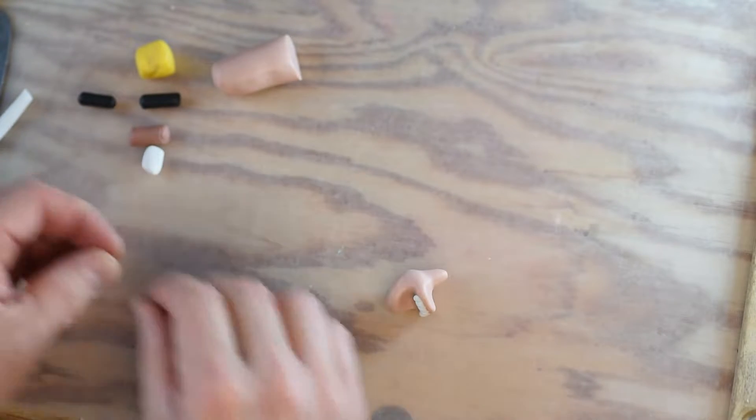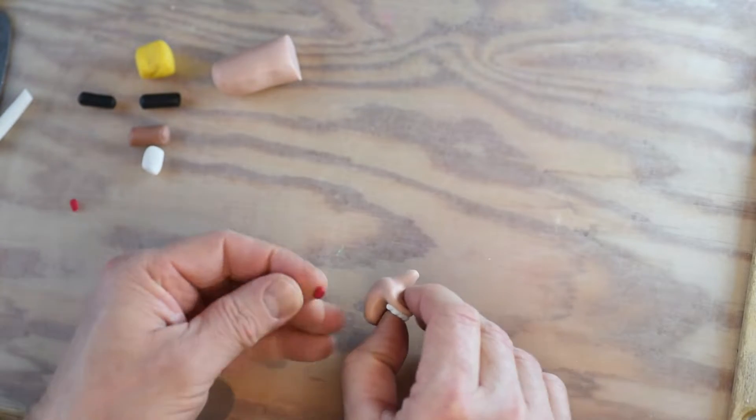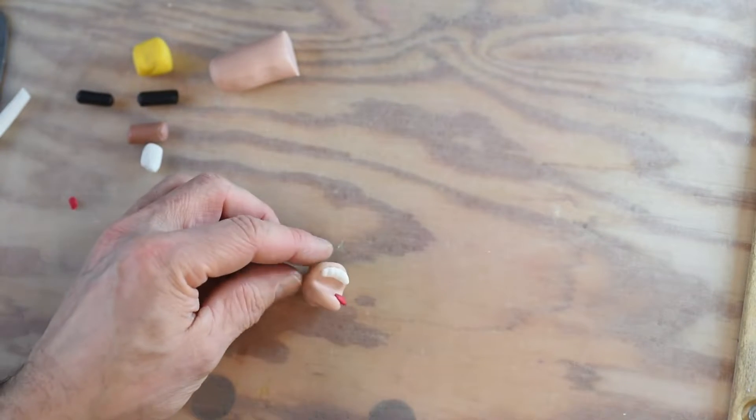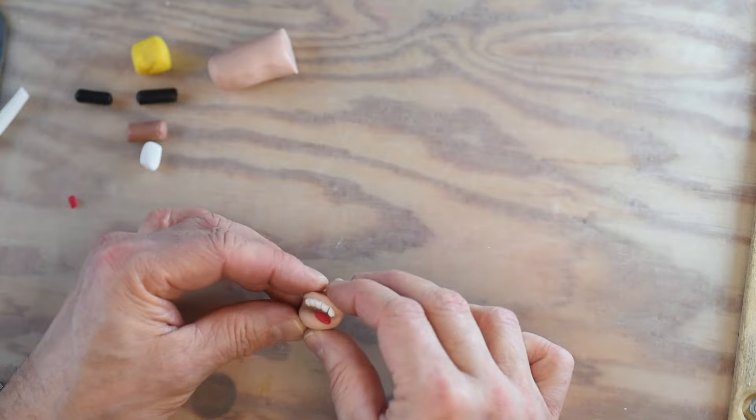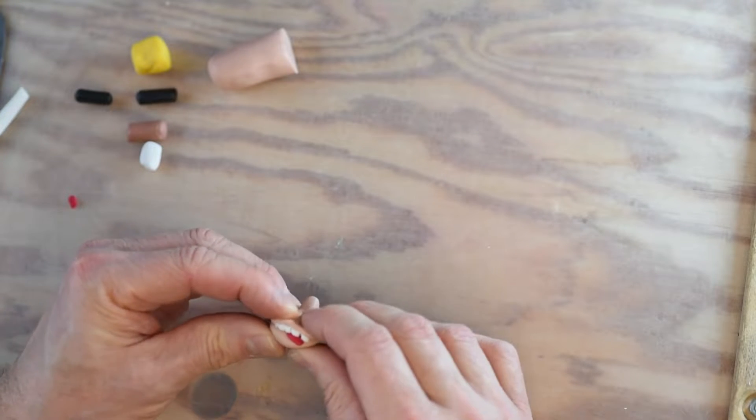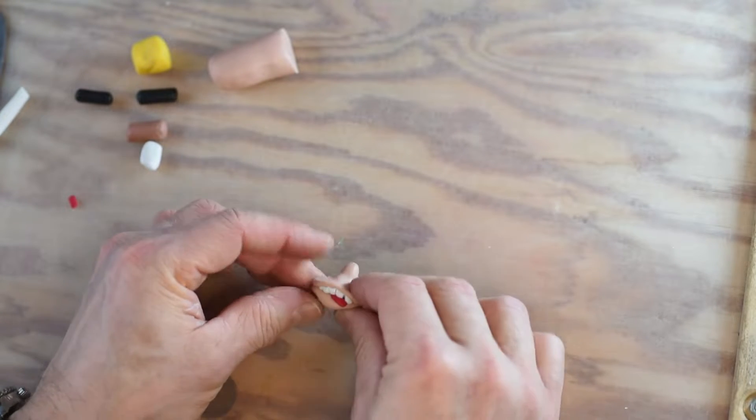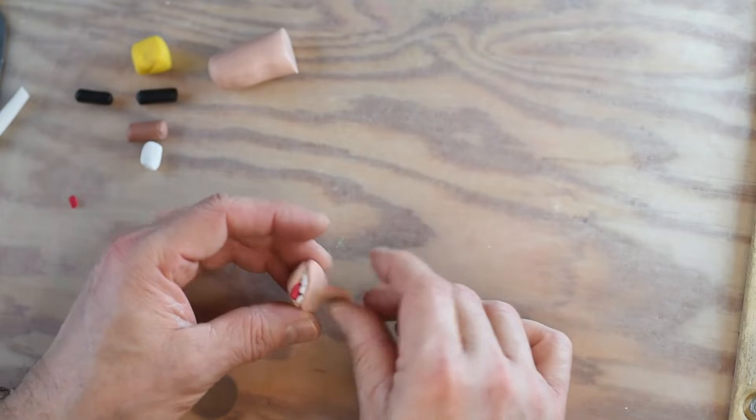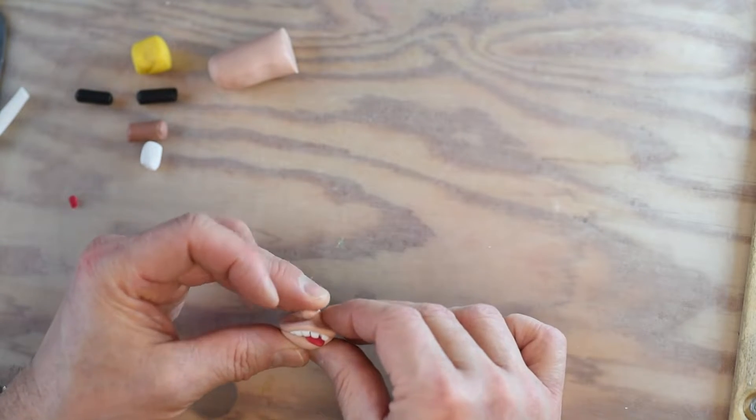If you want, you can add a piece of red to get a tongue. Now just squeeze it together and you have a mouth. By bending the nose, you get a perfect face.